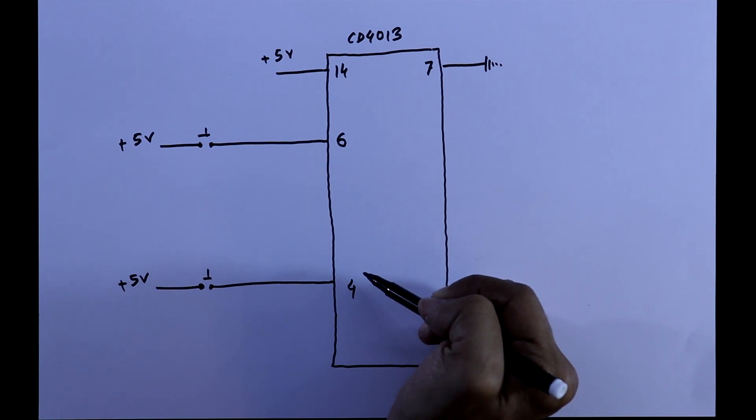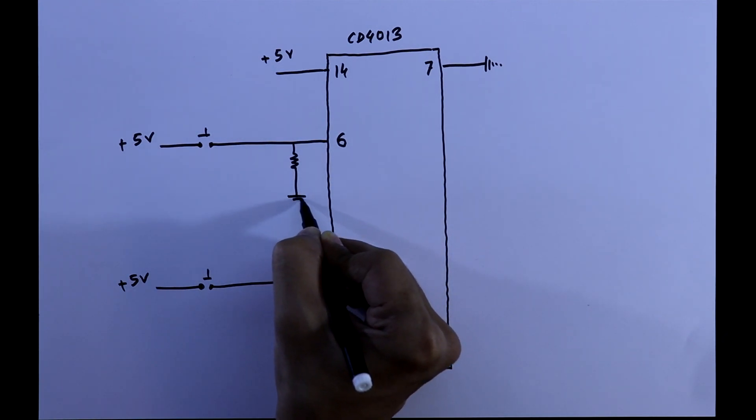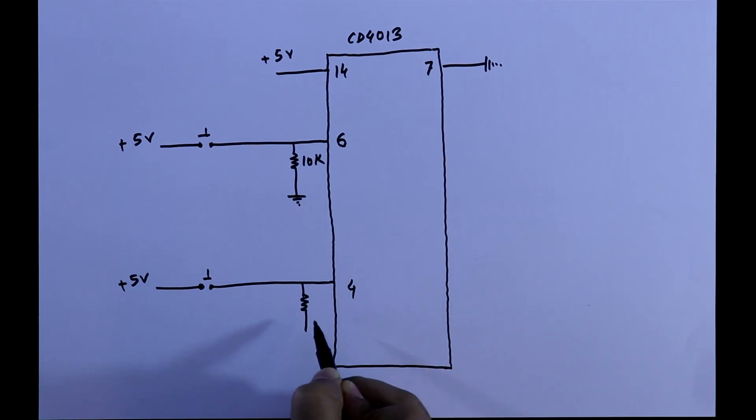As these two pins are inputs, we have to connect pull-down resistors. We have to connect pull-down resistors to the input of any digital IC. I already explained about this, link in the description below.